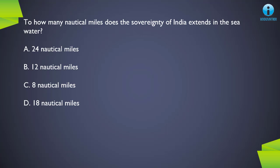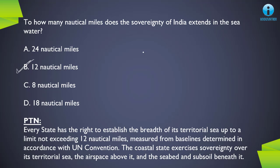Next question: to how many nautical miles does the sovereignty of India extend in sea water? This refers to how far from the baseline India has control or sovereignty. The correct answer is B, 12 nautical miles. This is not just for India — it has been decided by a United Nations convention that every country must follow. Every state has the right to establish the breadth of its territorial sea up to a limit not exceeding 12 nautical miles, measured from its baseline. The coastal state exercises sovereignty over the territorial sea, the air space above it, and the seabed and subsoil beneath it.